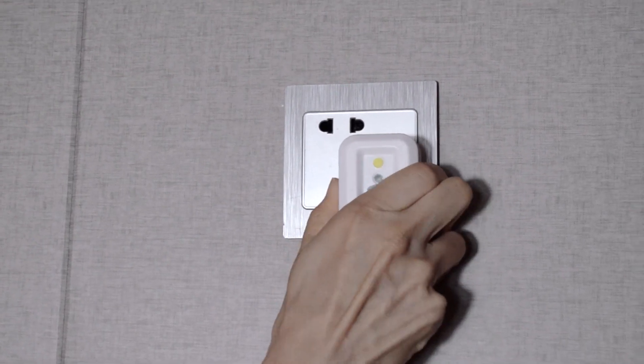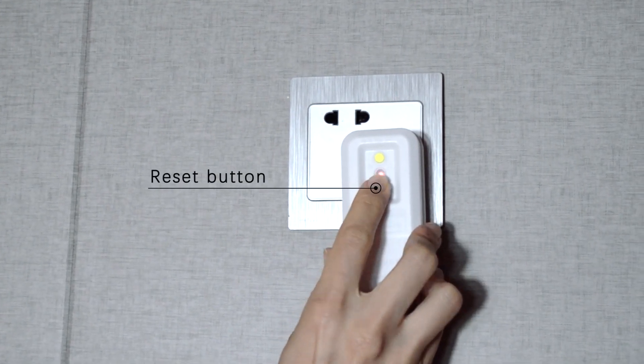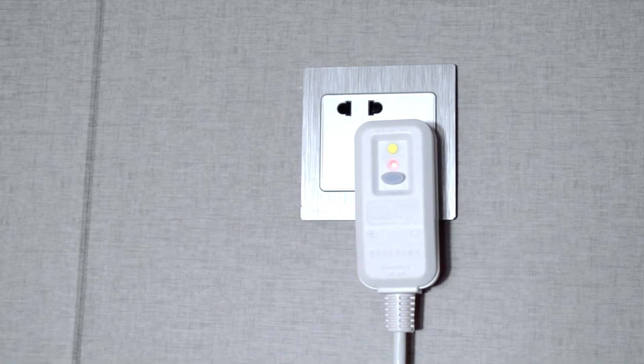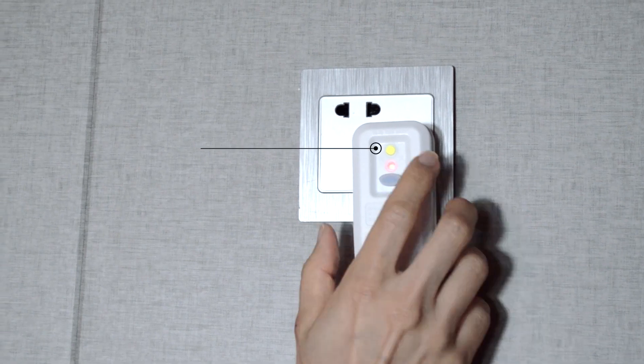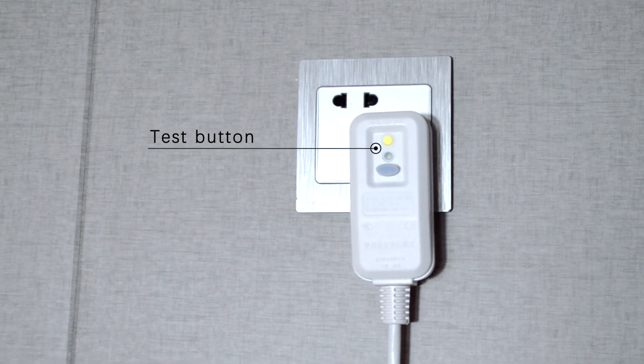Connect the leakage circuit breaker to a power socket. Press the reset button. The blue and red lights turn on, which indicates the device is powered on. Press the test button. The yellow and red lights turn off, which indicates the protection is on.